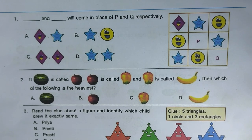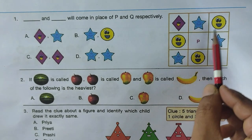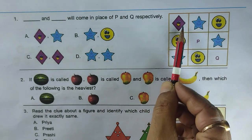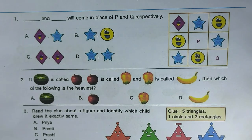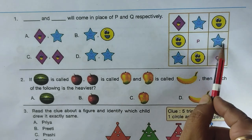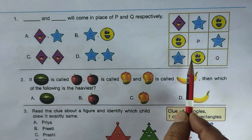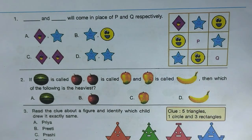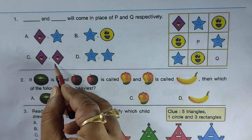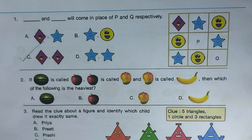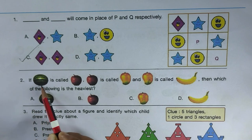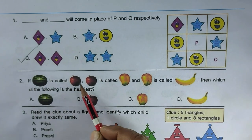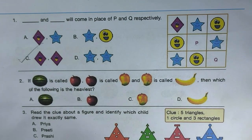Next question: what will come in place of P and Q respectively? In the first row we have diamond, star, circle — each row has the same figures. Where circle and star are present, diamond is missing. Both P and Q positions need a diamond, so option C is the right answer.